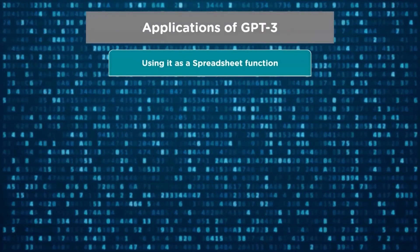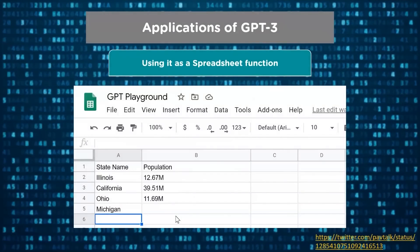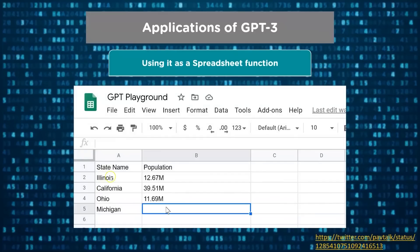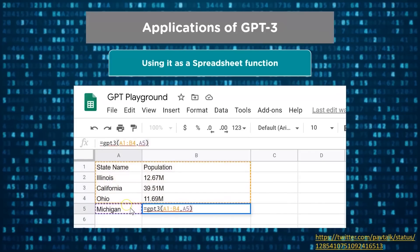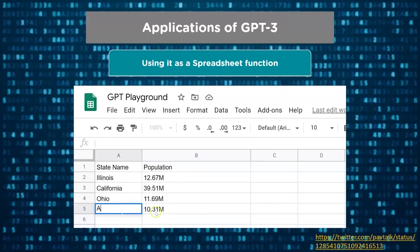GPT-3 can also be used as a function in Excel or Google Spreadsheets. Here we have a few state names and their populations. For example, if you want to find the population of Michigan, you can select that table and give Michigan as a parameter. GPT-3 will automatically search for the population and return the result in a few seconds — we see 10.31 million.